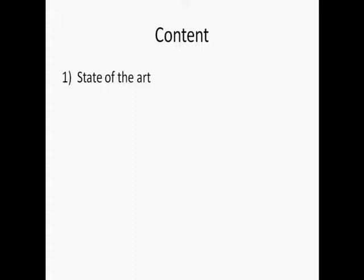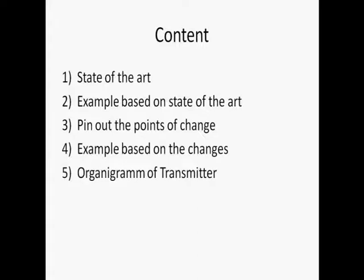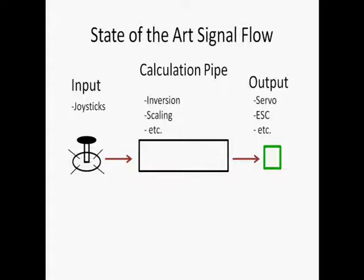This is the content of the PowerPoint presentation and it consists of six points. The first one is I'm going to show the state of the art of radio transmitters. The second is I'll give an example based on the state of the art. In the third point I'm going to pin out the changes I want to do. In point four I'm going to give an example based on the changes dealing around the same topic as point two to make it comparable. Point five shows the organigram of the transmitter. And for point six I'm going to step out of the PowerPoint presentation and give a live demonstration of what I've implemented until now, and to show the way it's going to work.